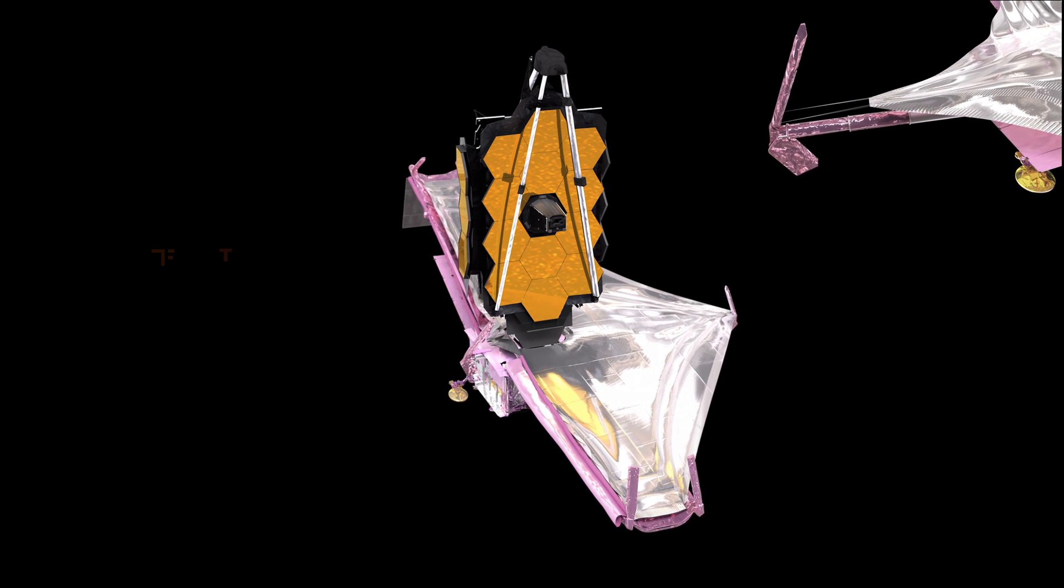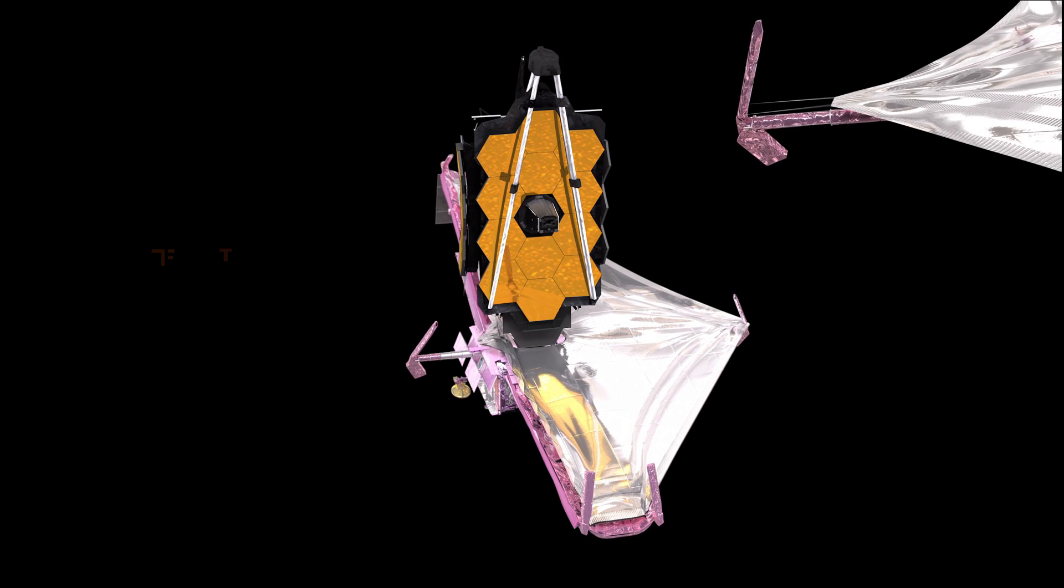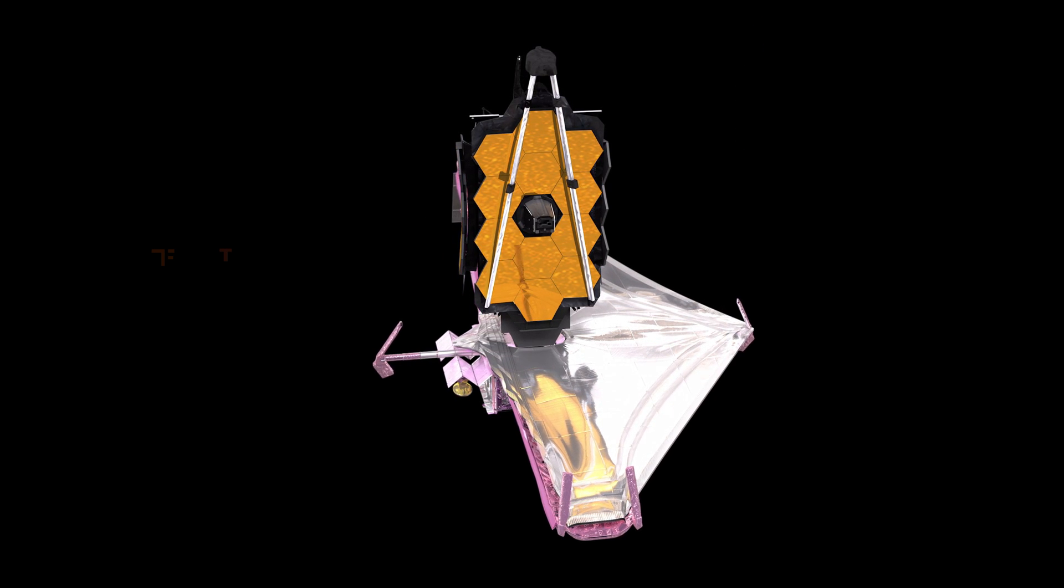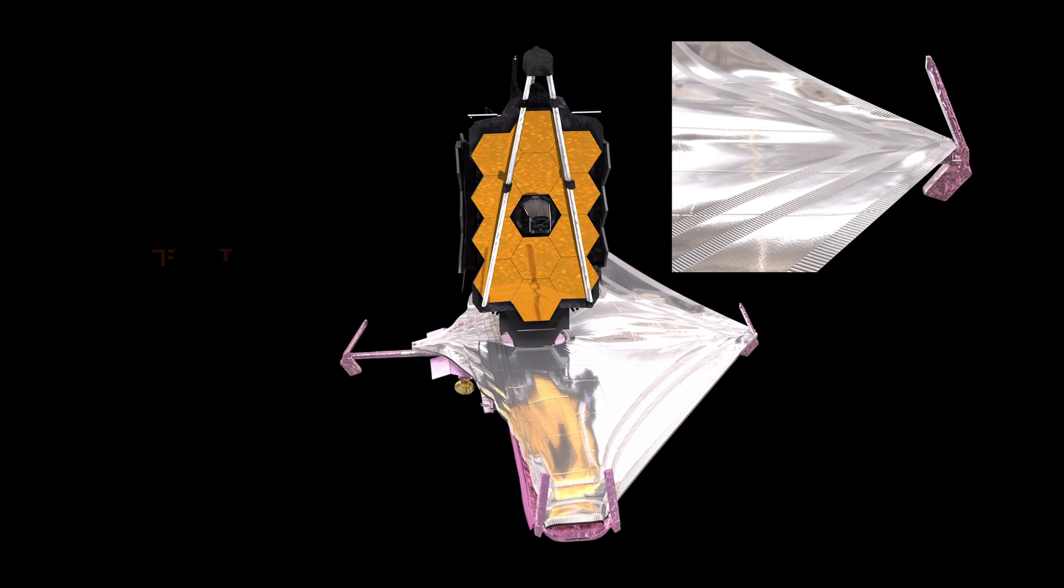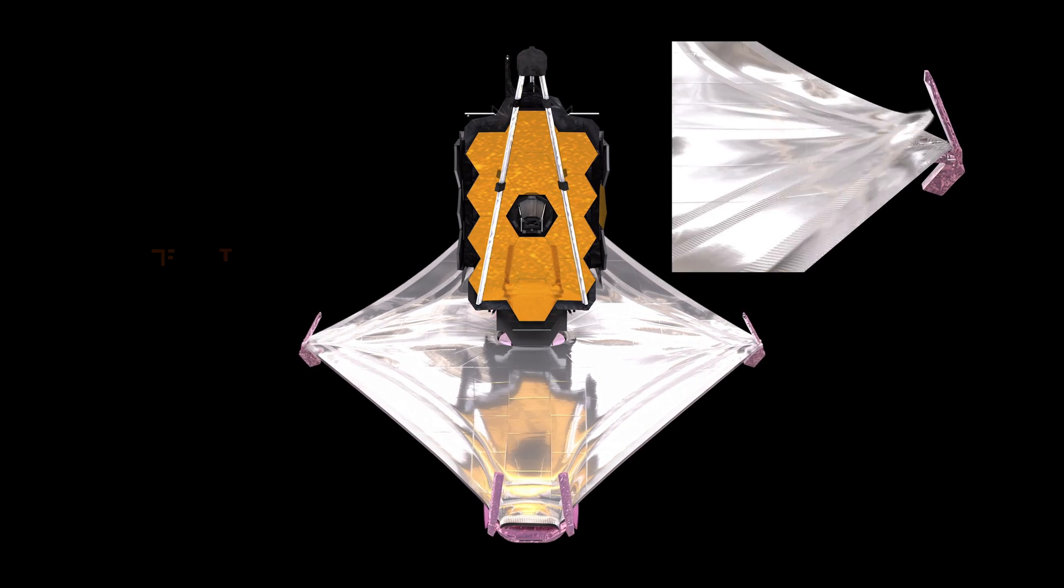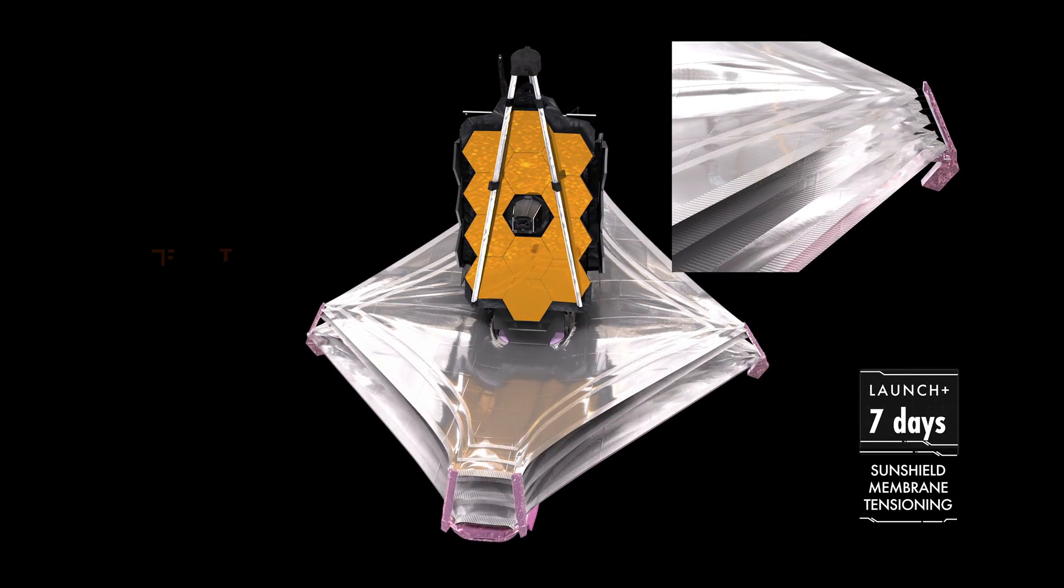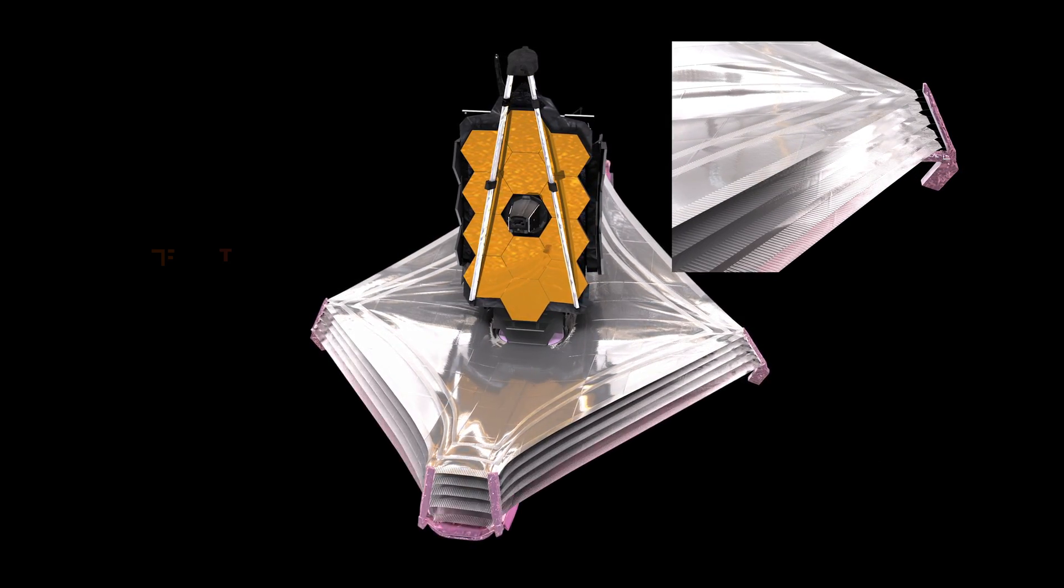Sunshield mid boom deployment occurs six days after launch. Sunshield layer tensioning occurs seven days after launch. This is a multi-step, two-day activity which completes the final membrane release and tensions the five layers of the sunshield.